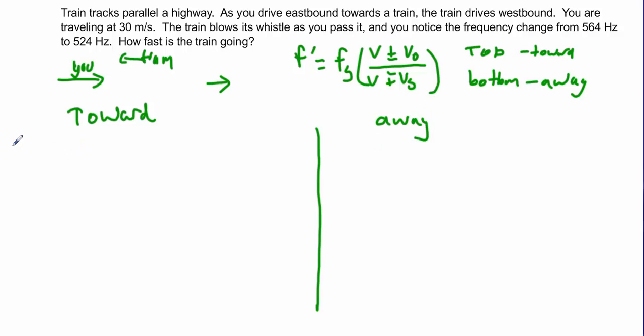When we're moving towards each other we know that the frequency that we detect is 564 Hz. The frequency of the source we don't really know. The velocity of the source we also don't know. However, you are moving at 30 meters per second, so the velocity of the observer is 30. And sound moves at 343 meters per second.